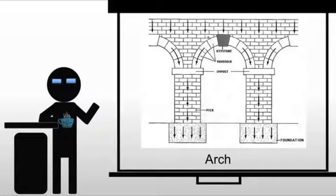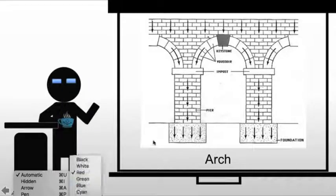So now we move to arches. Post and lintel is ultimately limited in width because you have to deal with the tensile strength of the lintel itself. Whereas an arch can cover a much larger span. The reason is we're putting everything under compression, so there's no concern with tensile strength.